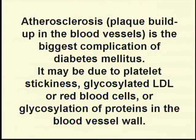This can come from red blood cells being glycosylated, platelets getting sticky because of the sugar, glycosylated LDL, and glycosylation of the proteins in the blood vessel wall. There are a whole bunch of reasons why high blood sugars cause atherosclerosis and the subsequent lack of oxygen and need for amputation eventually.